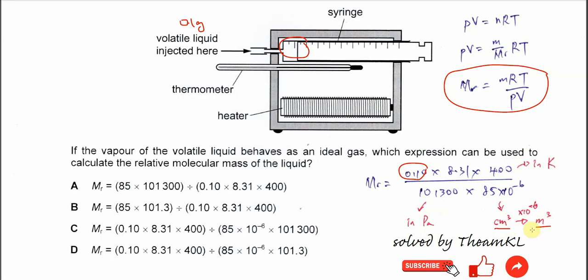So from cm³ to meter cube is times 10^-6 because it's from the smaller to a larger unit. Okay, so then we can get the answer now, which is C.